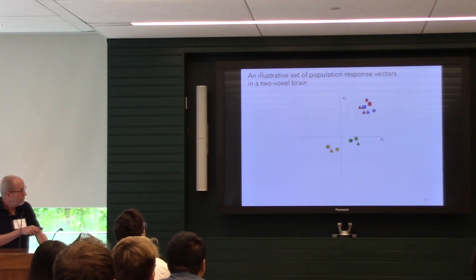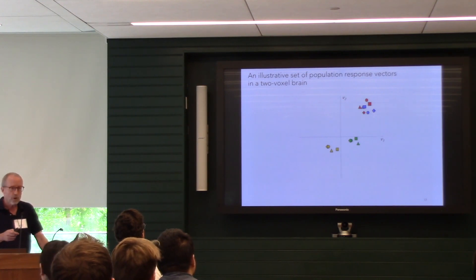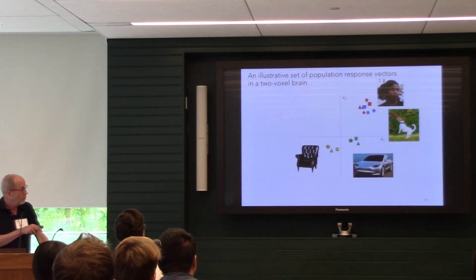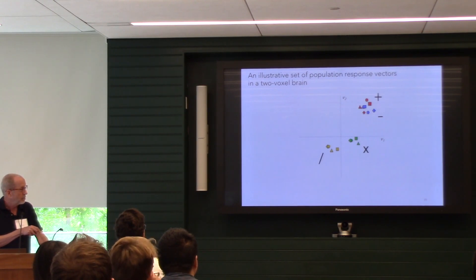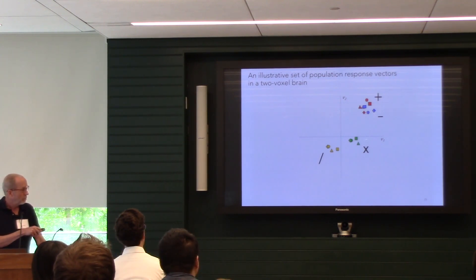To illustrate with a two-voxel brain: there are four categories — red, blue, green, and yellow — which could be faces, dogs, cars, and chairs, or operations like addition, subtraction, multiplication, or emotions like happy, neutral, anger, and disgust. Representational geometry is the distances between these vectors in this two-dimensional space. If you look at the average location for the four categories, you can index those distances as Euclidean distances or as polar angles. Most of the work is done on polar angles using correlation.